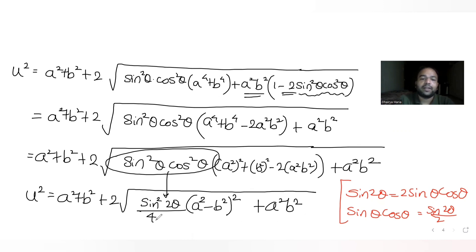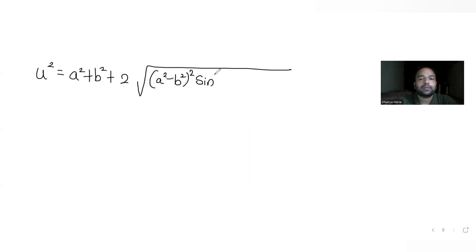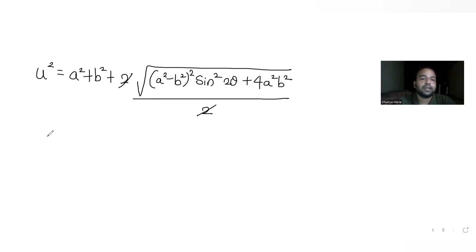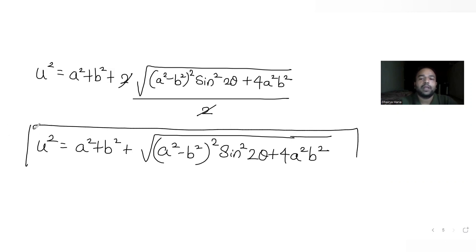From this expression, taking the 4 out from the root gives a factor of 2. So u square equals a square plus b square plus two times (one half) root of (a square minus b square) whole square times sin square 2 theta, plus 4 a square b square. This is the simplified expression for u square — with only one trigonometric ratio, sine, remaining.